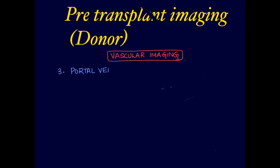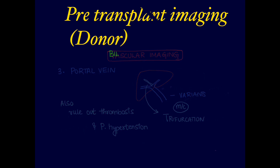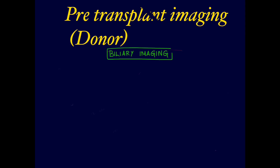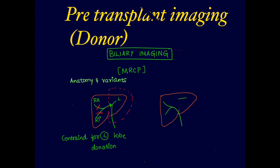For the portal venous system, the portal vein has right and left branches; the most common variant is trifurcation with three branches. Thrombosis and portal hypertension must also be ruled out. For biliary imaging, the standard protocol is MRCP. Anatomy and variants are noted — individual drainage of both lobes is critical. If right anterior and posterior branches drain into the left lobe branch, it is a contraindication for left lobe donation. Similarly, if the left drains into right anterior or posterior branches, it is a contraindication for right lobe donation.